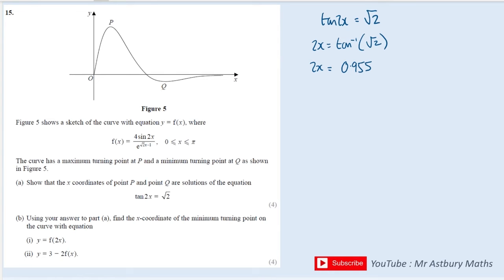And then top tip is that whenever you do tan to the minus 1, to get the second solution, you will take your first solution and add on pi, or you will do pi plus the first solution. And for cos, that's 2 pi minus, and for sine, that's pi minus. Really important you know those three. So to get the second solution, I will add on pi, which will give me 4.097.